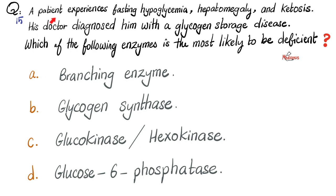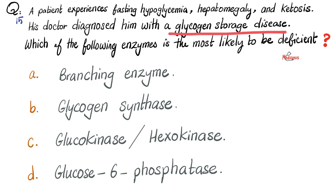Question 15: a patient experiences fasting hypoglycemia, hepatomegaly, and ketosis. His doctor diagnosed him with a glycogen storage disease. Which of the following enzymes is most likely deficient? Is it A, branching enzyme? B, glycogen synthase? C, glucokinase or hexokinase? Or D, glucose-6-phosphatase? Please pause.